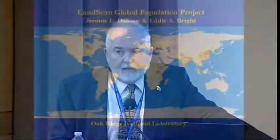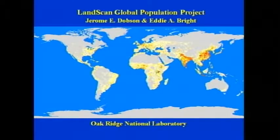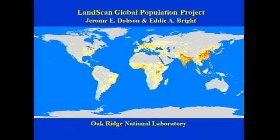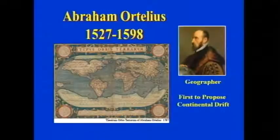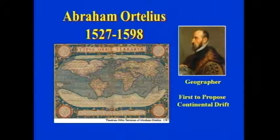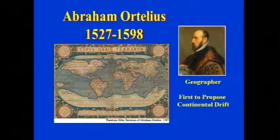What's geography good for? I myself have been involved in developing the Landscan Global Population Database. We feel very good about the uses to which it has been put. The first suggestion ever of continental drift was by Abraham Ortelius in 1596. He was a geographer. He wrote it in a book called Thesaurus Geographicus.